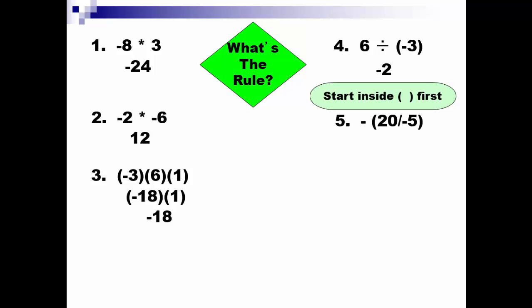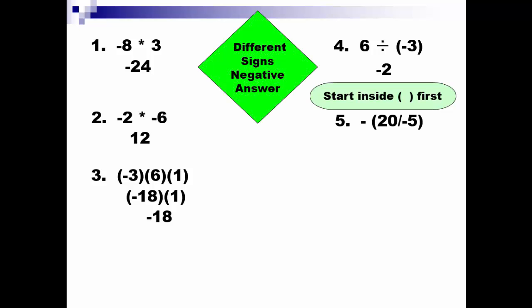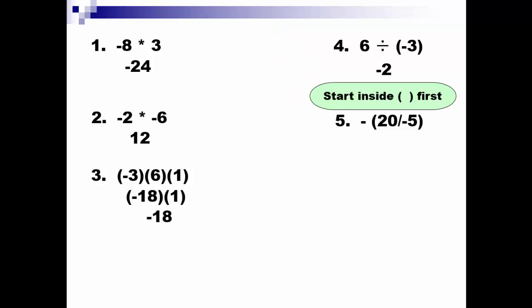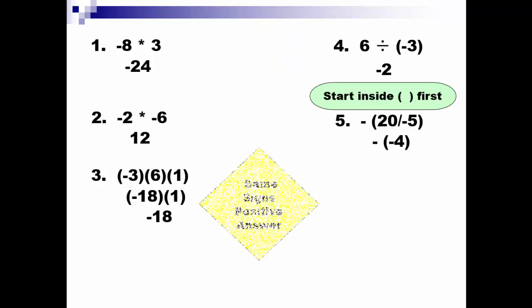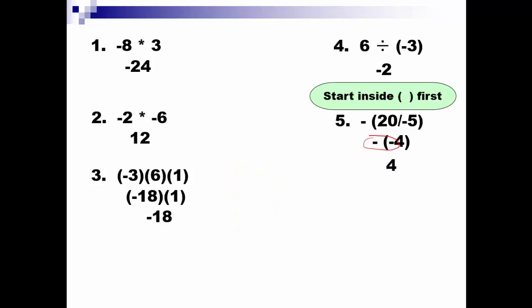Working within parentheses — what's the rule? I'm dividing. When I divide positive 20 by negative 5, those signs are different, so my answer will be negative within the parentheses — that's negative 4. But there's still a trailing negative on the outside. The opposite of a negative: same signs, the answer will be positive. So your final answer is positive 4.